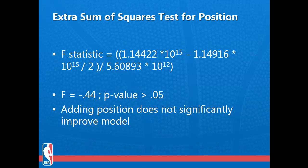In basketball, players are divided into positions based on size and skill set. Since there is a large difference between the responsibilities and on-court statistics of players of different positions, we thought including position might increase the correlation of our model. We divided players into three positions — guard, forward, and center — and performed an extra sum of squares test. However, the extra sum of squares test for position was insignificant, meaning position did not improve our model. A possible reason is that position is already mostly accounted for by statistics such as field goals attempted, points, and usage percentage, which are heavily determined by a player's position.